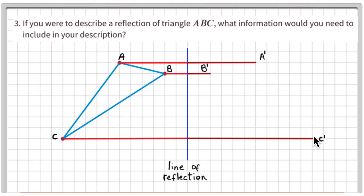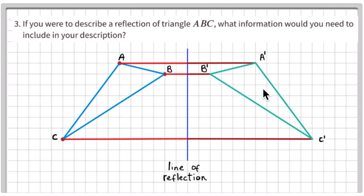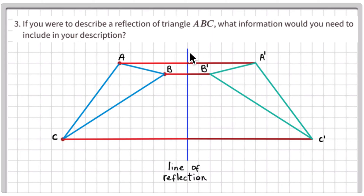Connect each of those corresponding points in order — A prime, B prime, C prime — so you don't get confused. Notice all the angles remain the same and all the lengths remain the same. Each corresponding point is an equal distance from the line of reflection, and the move from A to A prime is perpendicular to the line of reflection, meaning it forms a 90-degree angle.